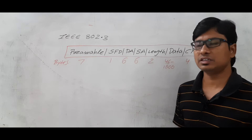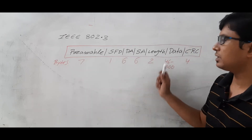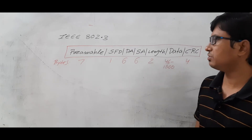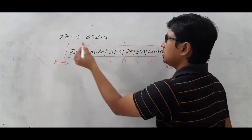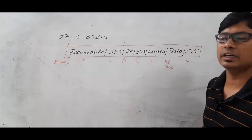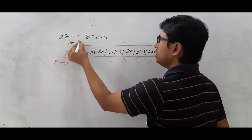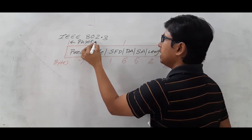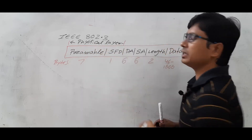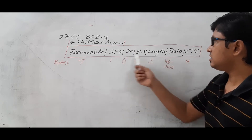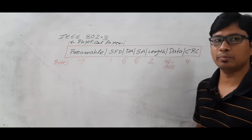Now let me discuss each field in detail — why we need a preamble, why we need a start frame delimiter, destination address, source address, and everything. Remember one point: the preamble and the start frame delimiter will be added by the physical layer. So preamble and the start frame delimiter are actually added by the physical layer. This is the actual Ethernet frame format from the data link layer point of view.